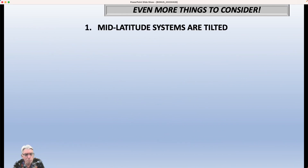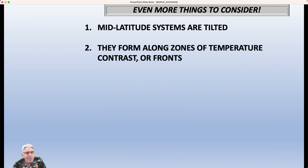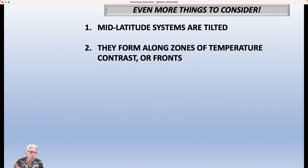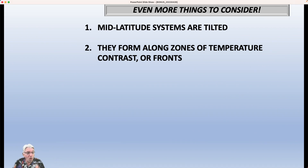Now let's talk about mid-latitude systems. They are tilted, and they form along zones of temperature contrast or fronts. The North Carolina coast, especially in the wintertime, is a great breeding ground for low pressure areas because the Gulf Stream is just offshore, warming the air just above it — even in January the water temperatures are near 70 degrees in the Gulf Stream. If we have an outbreak of cold air, temperatures over land are much colder, and we set up a natural front. There's a term for that called frontogenesis — the beginning of a front. If an upper-level system comes along and interacts with that front, you can get a huge cyclone that buries Baltimore, Washington, Philly, New York, and Boston with heavy snow.